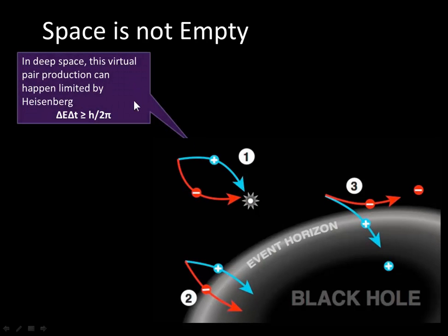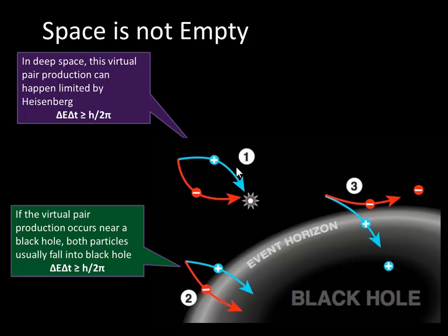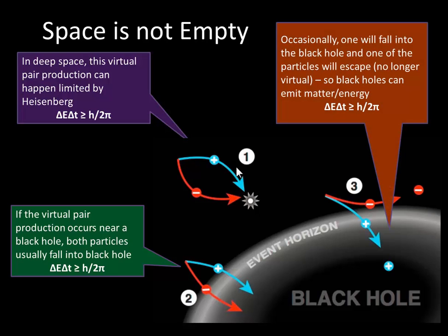In deep space, this virtual pair production can happen limited by Heisenberg's uncertainty principle. If the virtual production occurs near a black hole, both particles usually fall into the black hole. But what happens here?